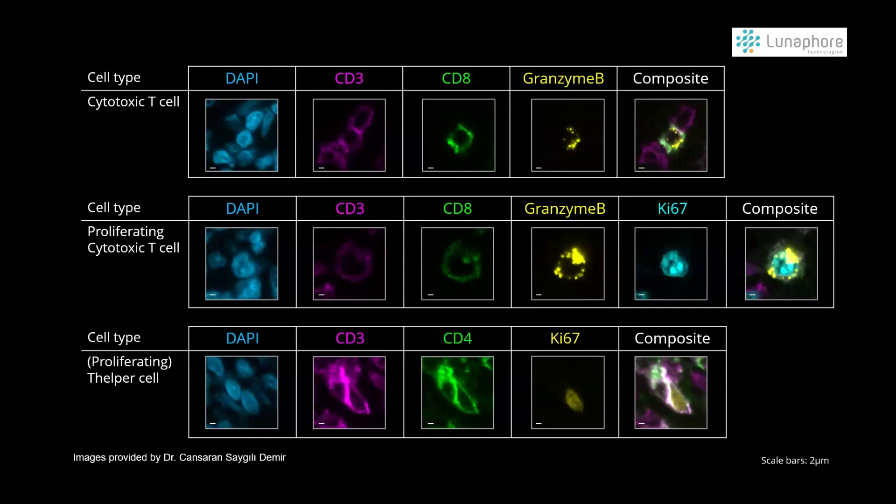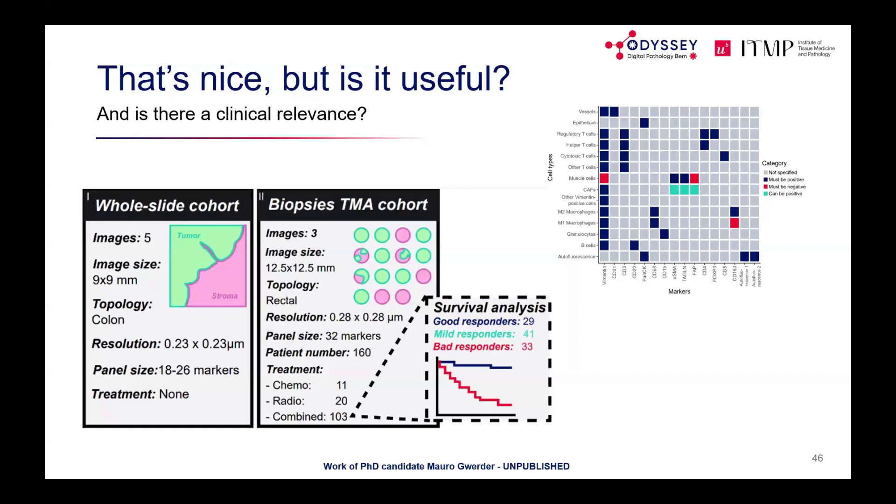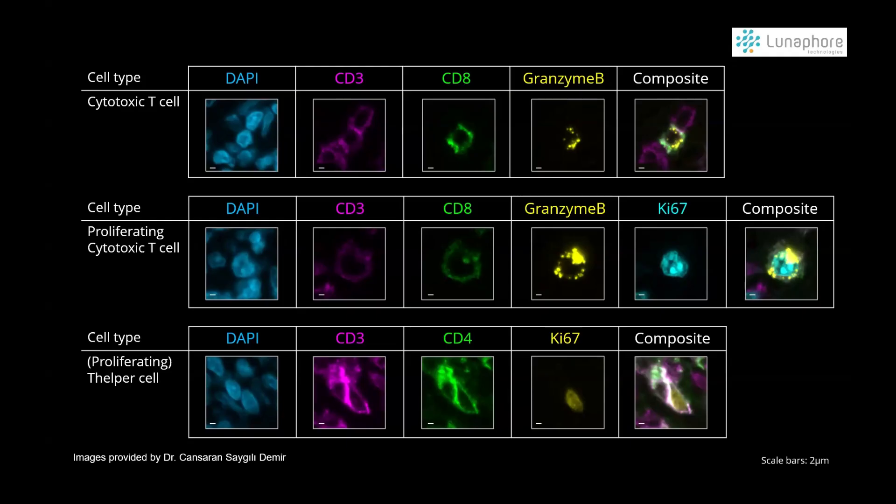With 100 channels, manual visual analysis is impossible. Mining tools are needed to identify novel cell phenotypes and biologically meaningful marker combinations. For example, previously unknown CD4-positive PD1-positive cells with cytotoxic potential can be discovered through unsupervised analysis of multiplex data.